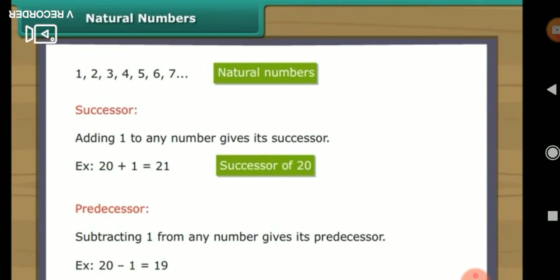Next, successor. What is successor? Adding 1 to any number gives its successor. For example, 20 plus 1 is equal to 21. Therefore, the successor of 20 is 21. Successor means simply the immediate next number. The successor of 20 is the next immediate number, that is 21.